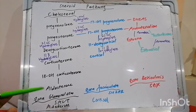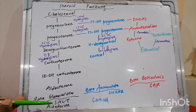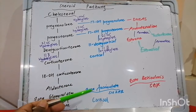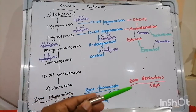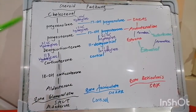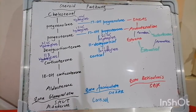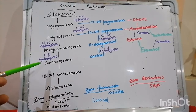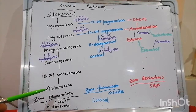The zona glomerulosa is associated with aldosterone, which brings in salt. Aldosterone's primary function is to upregulate the epithelial sodium channels in the distal tubule, bringing in sodium and dumping potassium. In the zona glomerulosa pathway, we start with cholesterol, and the enzyme desmolase converts cholesterol into pregnenolone. Pregnenolone becomes progesterone, and then 21-alpha hydroxylase catalyzes the conversion of progesterone to deoxycorticosterone. Then 11-beta hydroxylase converts deoxycorticosterone to corticosterone, which becomes 18-hydroxycorticosterone and then aldosterone.